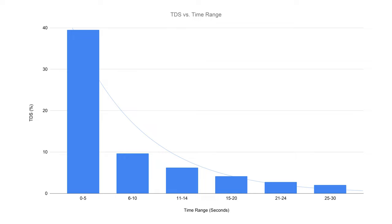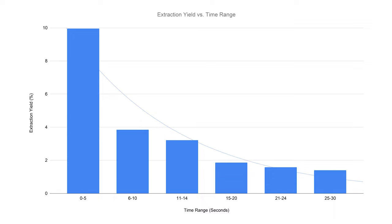First, let's look at the total dissolved solids percentage of each range. TDS decayed exponentially, with sharp declines between the first couple of samples and smaller drop-offs in the later ones. If I had continued the shot even longer, it would have likely continued this trend — more water pushed through less-soluble grounds would keep diluting the solution, resulting in a weaker and more bitter cup.